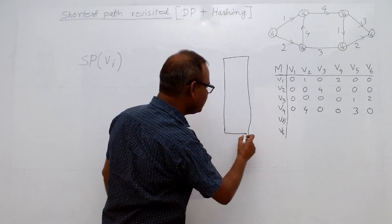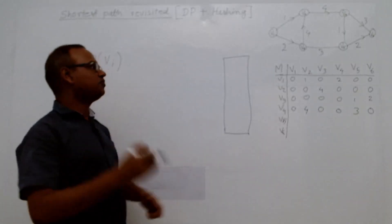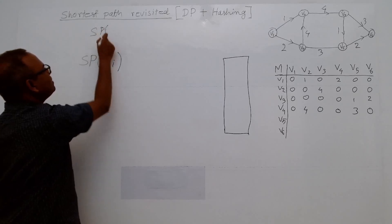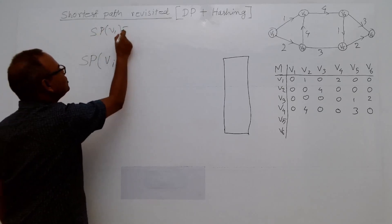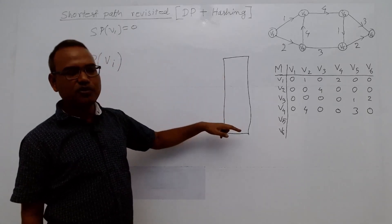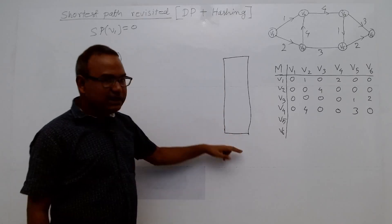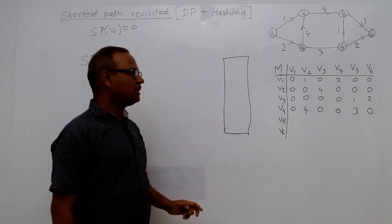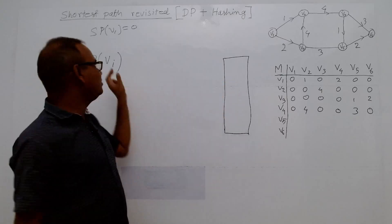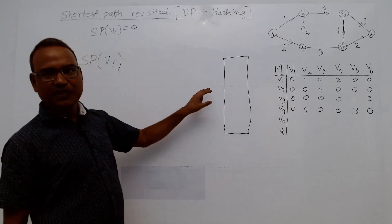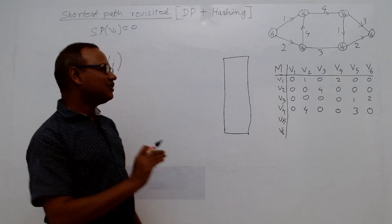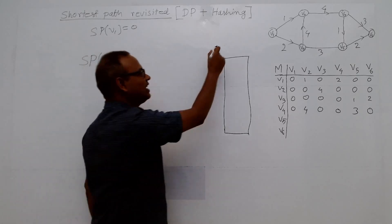Previously I used bottom-up computation, starting from the stopping condition sp(V1) = 0, and computed all values. But for a very large graph, we generally do not do it this way. For understanding in the classroom we write it as an array, but this can be implemented efficiently using a hash table.